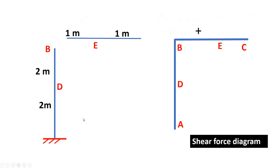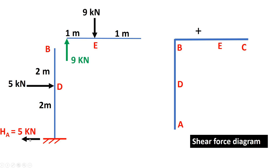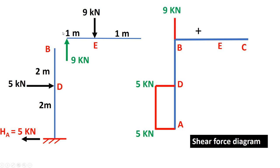Now let us draw the shear force diagram. We have 5 kN on one side and 5 kN on the other, and 9 kN at the respective locations. On the left side, 5 kN is constant from that point — then minus 5 — and over AD we have zero. Over the vertical member we have 9 kN constant from B to E, then minus 9, back to zero. The diagram is positive.